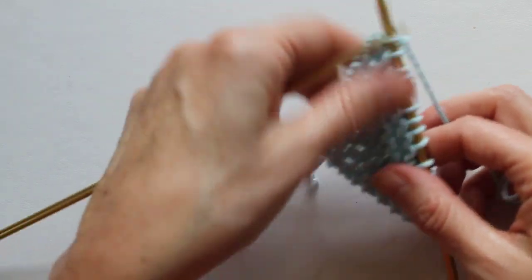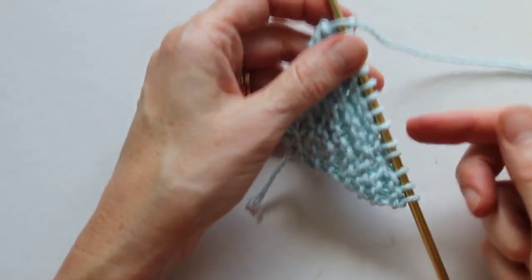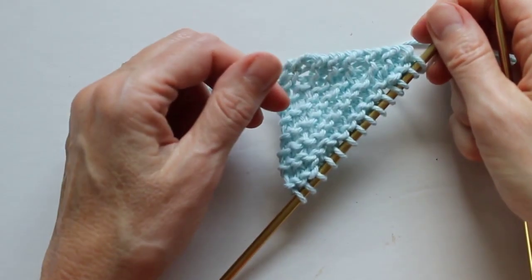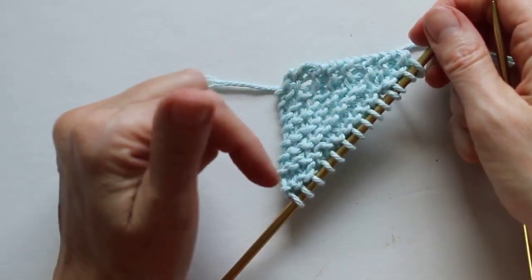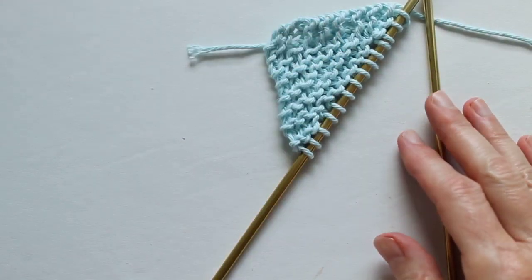So those are the two parts of the pattern that I thought you might want to have a little visual demonstration of. How to do the yarn overs. How those yarn overs look at the end of the row when you come along to them. And how you do the turning for the short rows if you want to make some more defined corners. I hope that helps. Thanks for watching.